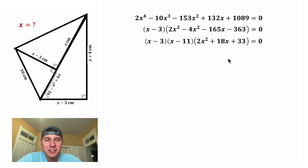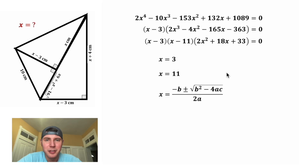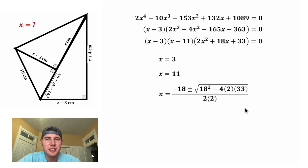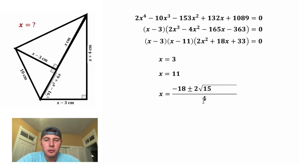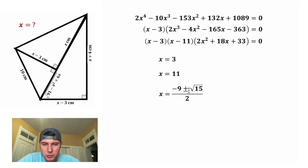Since the whole thing equals 0, either (x minus 3) equals 0, (x minus 11) equals 0, or the quadratic equals 0. That gives x equals 3 or x equals 11 from the first two factors. For the quadratic, we use the quadratic formula: a equals 2, b equals 18, c equals 33. 18 squared is 324, 4 times 2 times 33 is 264, and the denominator is 2 times 2 equals 4. Under the square root, 324 minus 264 is 60, which simplifies to 2 root 15. Dividing through by 2 gives x equals negative 9 plus or minus root 15.